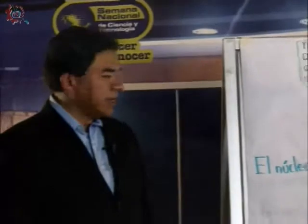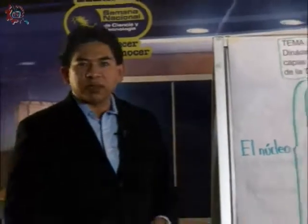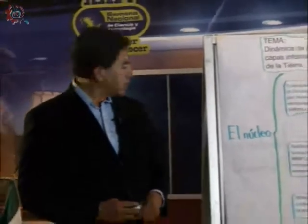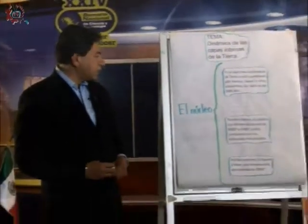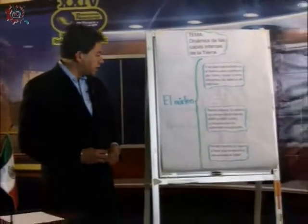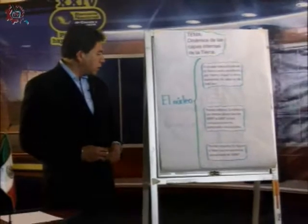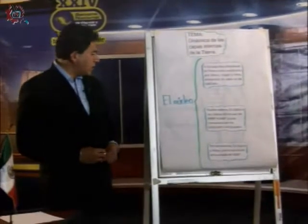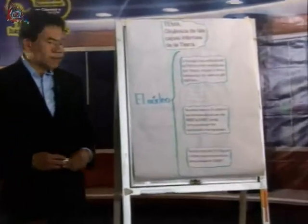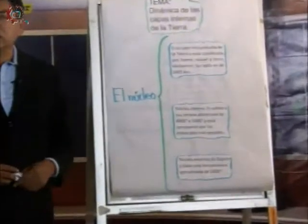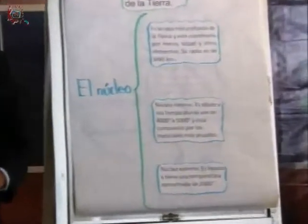The internal nucleus is solid, with temperatures ranging from 4,000 to 5,000 degrees Celsius, and it is composed of the heaviest materials. The external nucleus is liquid and has an approximate temperature of 2,000 degrees Celsius.